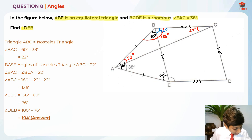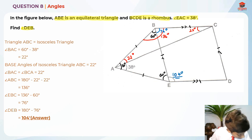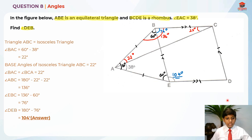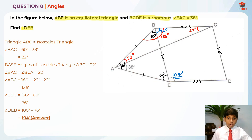So angle DEB is equal to 104 degrees. That is the answer for question 8. I hope you understood my explanation for this question on angles, and I hope you learned many new properties. If you didn't, I hope you can revise some of those properties. Thank you and bye-bye — I'll see you in my next video.